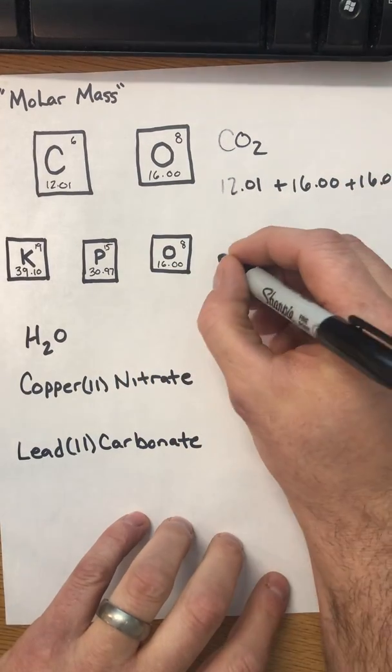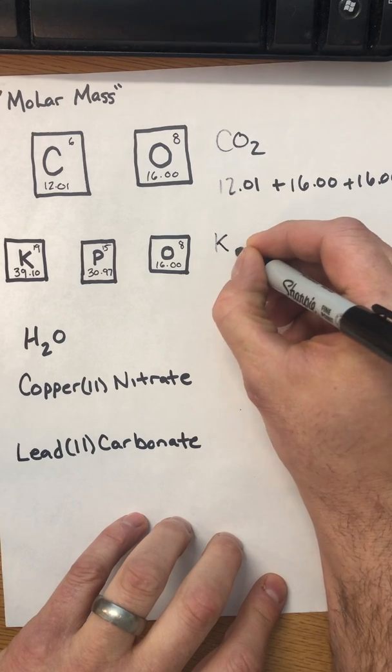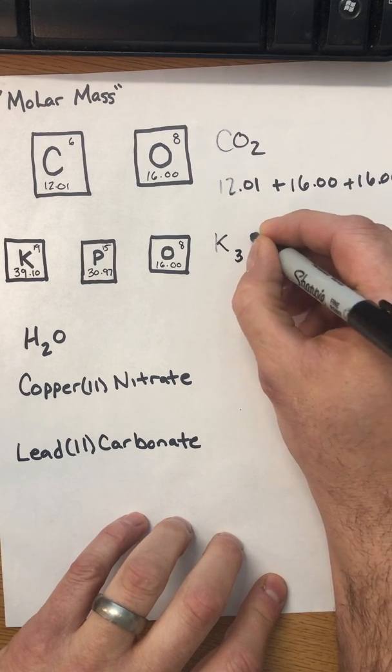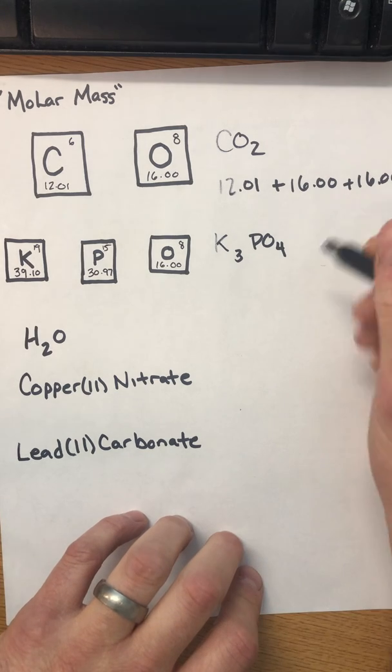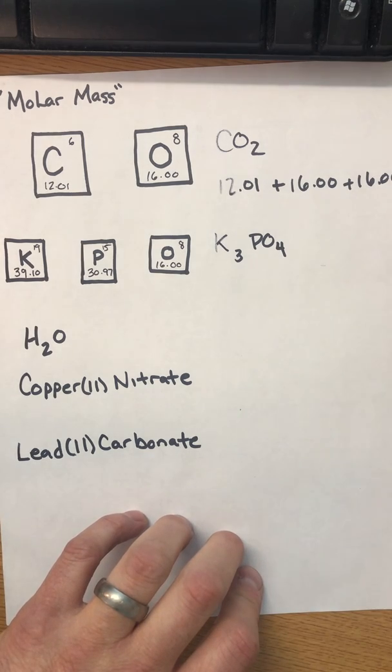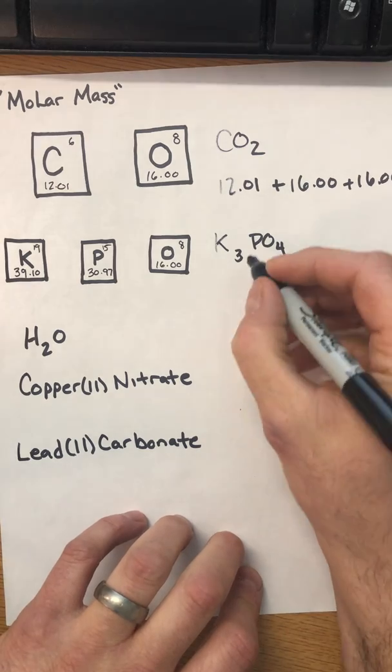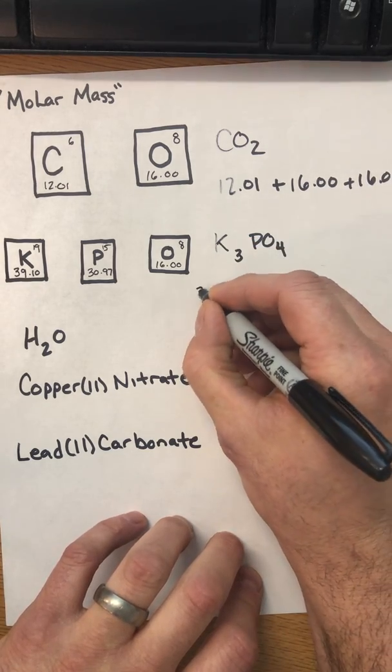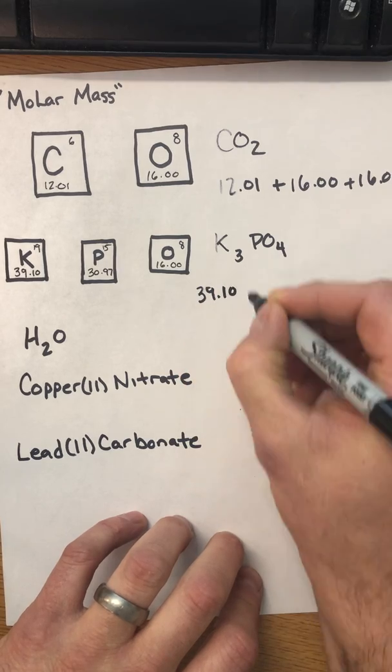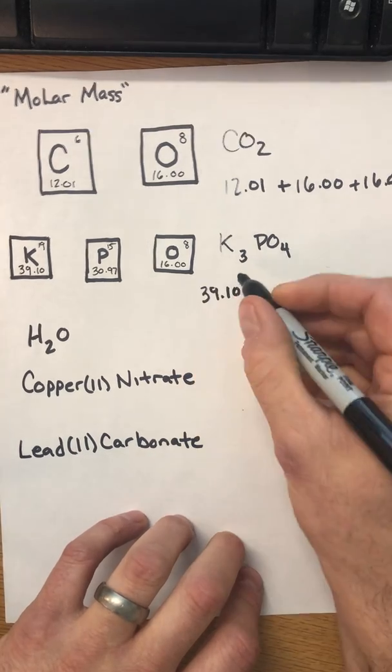Like let's look at K3PO4, although that's not really that much more complicated. It's not complicated once you know how to do this stuff. The mass of each of these individual potassiums is 39.10, and we have three of them, right? So instead of writing it out 39.10 plus 39.10 plus 39.10, I'm just going to multiply this by three.